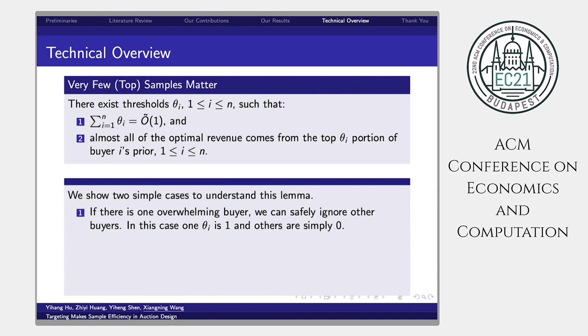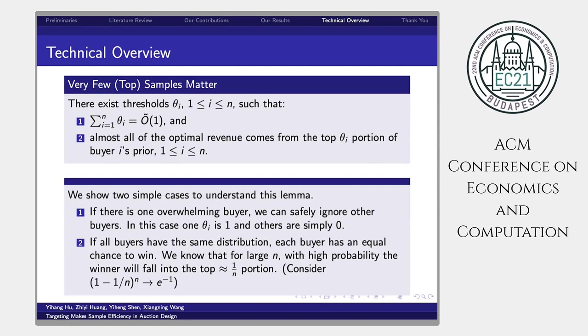Second, if all buyers have the same distribution, then each buyer has an equal chance to win. We know that for large n, with high probability, the winner will fall into the top about 1 over n portion. This is to consider the fact that 1 minus 1 over n to the power of n is converged to a constant given a large value of n.